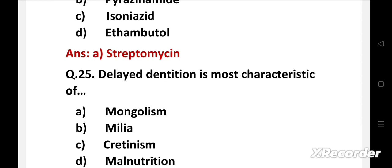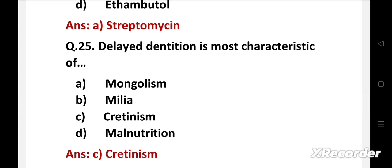Next question. Delayed dentition is most characteristic of: Option A: mongolism, B: milia, C: cretinism, D: malnutrition. Right answer is option C, cretinism. Cretinism is a disease of hypothyroidism. Hypothyroidism leads to impaired development of the growing fetus and leads to mental retardation and stunted growth.